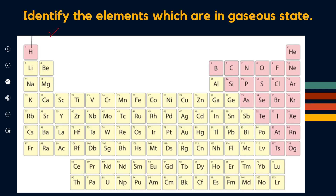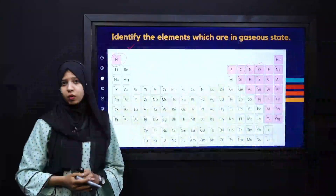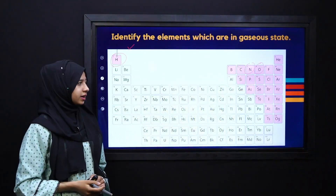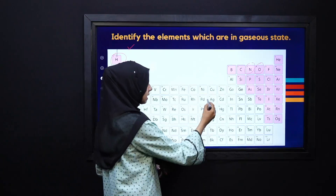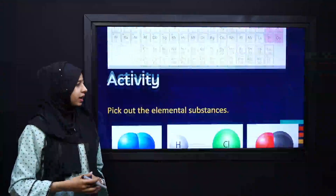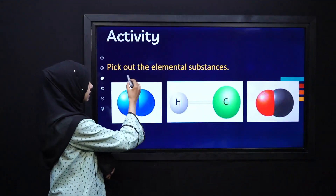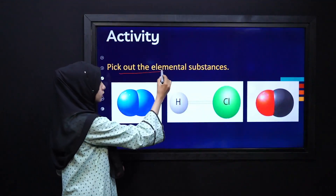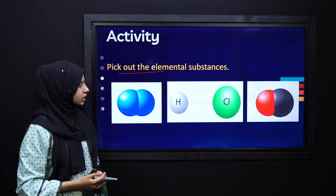We have some elements like oxygen, nitrogen, and hydrogen that exist in gaseous form. But some elements like silver and gold exist in solid form. Now let's apply the knowledge we have learned today.